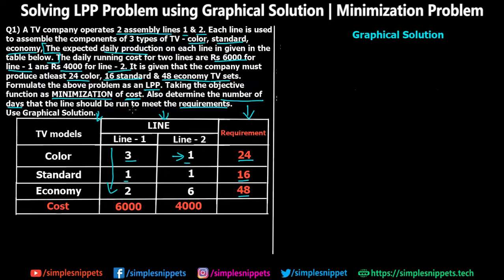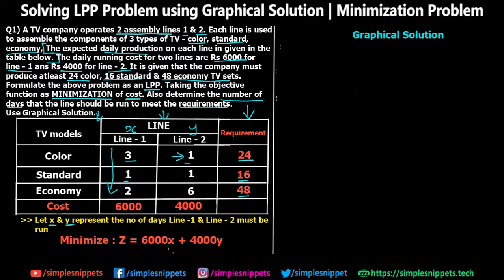We assume x and y represent the number of days line 1 and line 2 must be run respectively. The minimization equation is: minimize Z = 6000x + 4000y. For one day line 1 running costs 6,000, so for x days it's 6,000x. Similarly for one day line 2 running costs 4,000, so for y days it's 4,000y. This is the objective function.